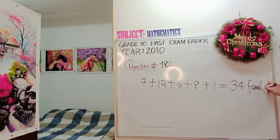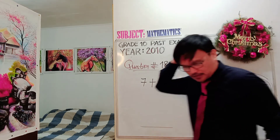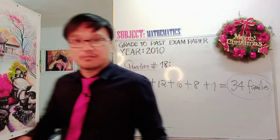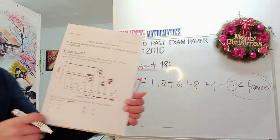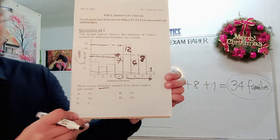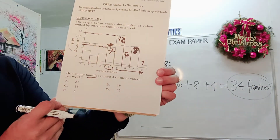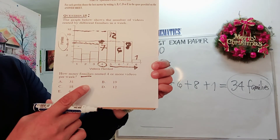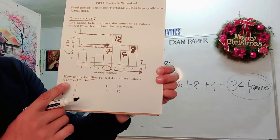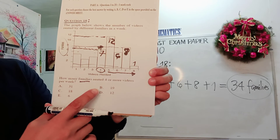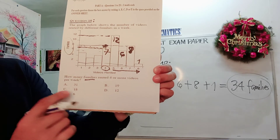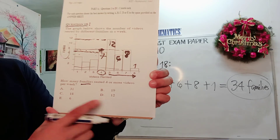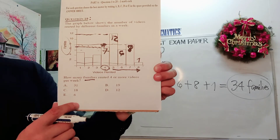Seven plus 12 plus six plus eight plus one equals 34 families. So the answer is 34 families. Let's check the options: A is 31, B is 19, C is 18, D is 12, and E is 6.